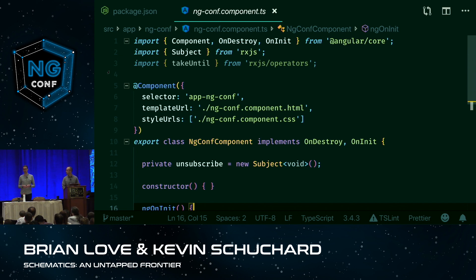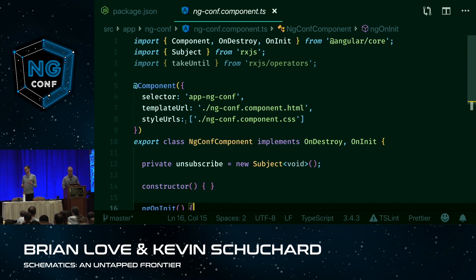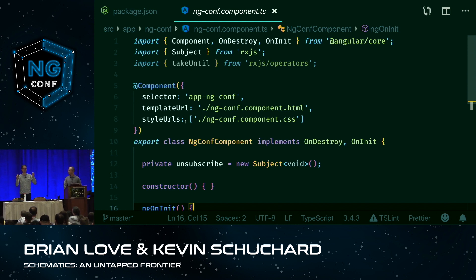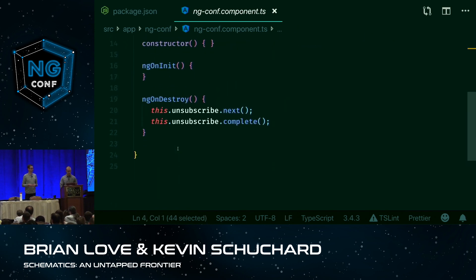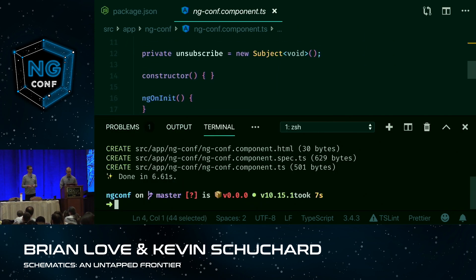I was finding myself repeating the same code continually in my Angular applications. I've got to import the Subject, import takeUntil, implement the OnDestroy interface, declare my subject, and then in ngOnDestroy go ahead and next on that subject and then complete it. I was doing this over and over again. So why not write a schematic to generate out a smart component that handles all of this? And so that's what we did.